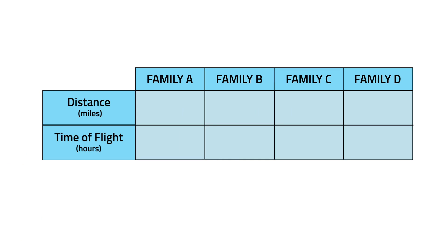Second, let's input the distance and time of flight of Family A, B, C, and D. Now that we have our data, let's identify if the quantities increase or decrease at a constant rate by getting the quotient of any specific pair of corresponding values in the table. If the process gives the same ratio, then the situation shows a direct variation.